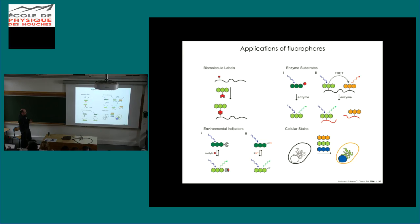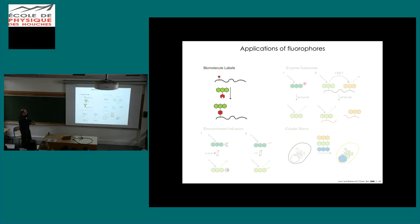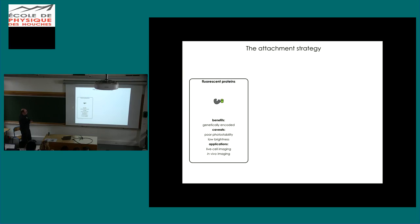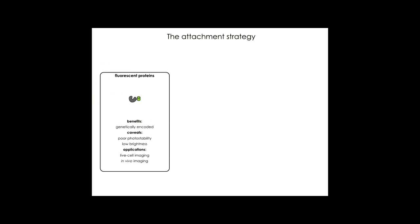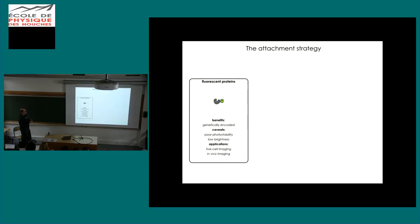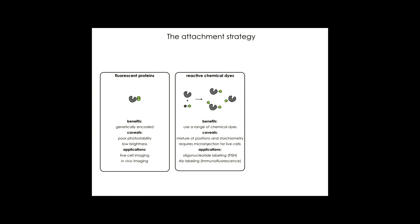So there are different applications of fluorophores: biomolecule labels, enzyme substrates, environmental indicators, and cellular stains. One thing we need to think about is the attachment strategy. How are we actually putting the fluorophore onto the biomolecule of interest? Fluorescent proteins are awesome. They're genetically encoded. You don't have to do anything. The cell does everything for you. There's this beautiful autocatalytic chromophore formation that makes the fluorophore. The caveats are that in general, fluorescent proteins have relatively poor photostability, especially when compared to synthetic fluorophores, and their brightness can be modest. The applications for these things are typically live cell imaging and in vivo imaging. The revolution we're seeing in vivo is really because of fluorescent proteins, because it's very difficult to get a dye into an animal.